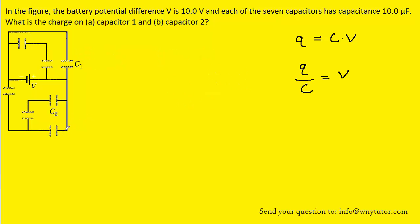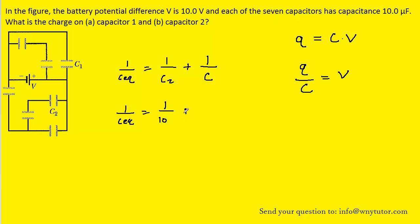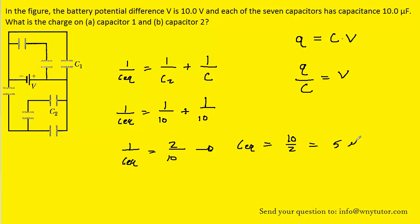For part B, to solve for the charge on capacitor 2, we first need to combine the capacitor marked C2 with the unmarked capacitor. These two capacitors are in series. To calculate the equivalent capacitance of a series arrangement, we add their reciprocals. Plugging in 10 microfarads for each, 1 over the equivalent capacitance equals 2 over 10. Inverting both sides, the equivalent capacitance equals 10 over 2, which is 5 microfarads.